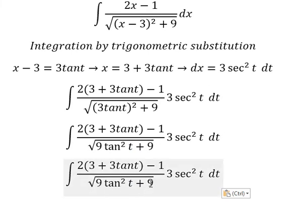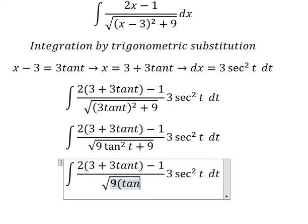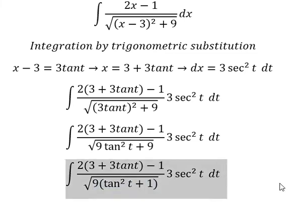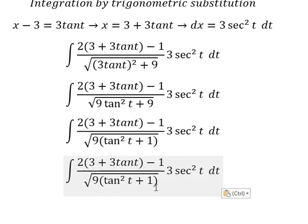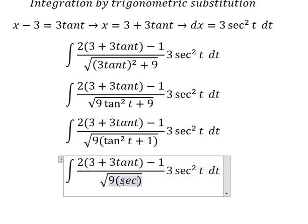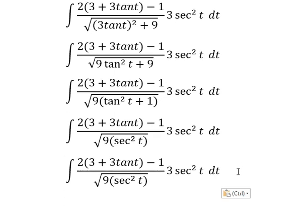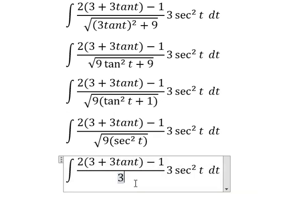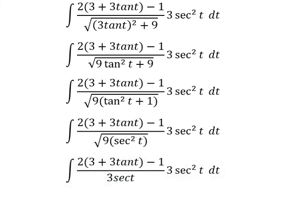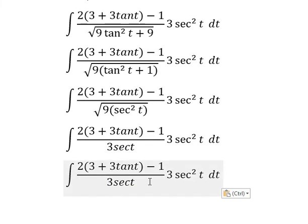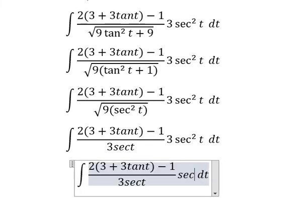Then with 9 and 9 we can do factorization. The expression inside changes to sec²(t). The square root of 9 sec²(t) gives us 3 sec(t). This simplifies with the denominator, leaving us with sec(t).